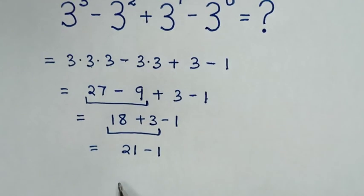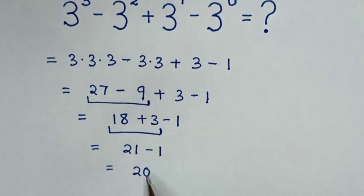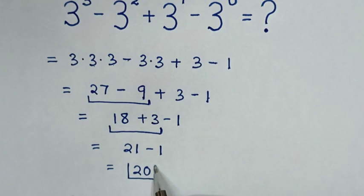So finally, 21 - 1 equals 20. This is our final answer.